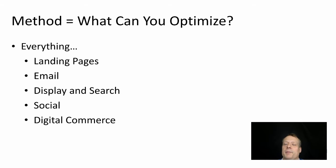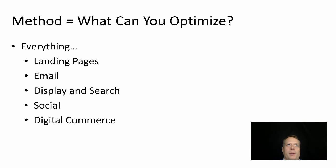Optimization is about choosing a method that best achieves a goal. We just talked about testing, now we're going to talk about the method — the means by which you're trying to achieve that goal. So what methods are we talking about? What can you optimize? Well, you can optimize everything — landing pages, for instance.